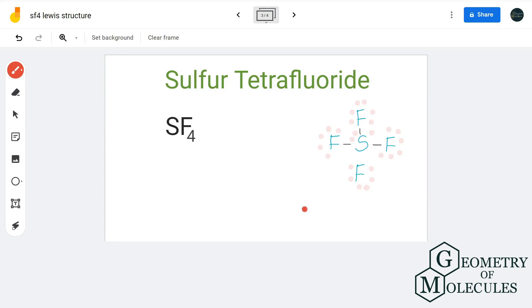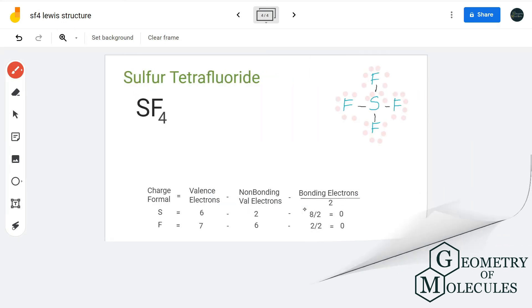So sulfur has six valence electrons, out of which two are non-bonding electrons and eight are bonding electrons, which will give us a formal charge of zero.